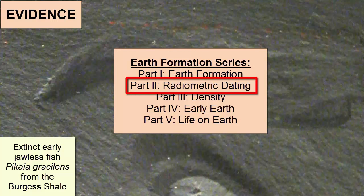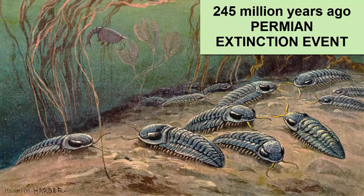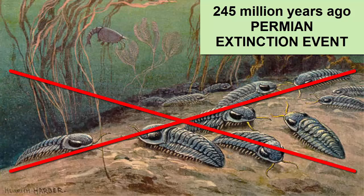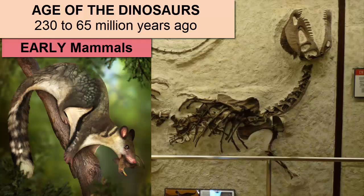Watch the video tutorial on radiometric dating for more information on that process. 438 million years ago is our first evidence of organisms moving onto land, including the first plants and insects. 245 million years ago was the largest mass extinction on the planet, during which the trilobites and many other early forms of life went extinct. Dinosaurs evolved soon after and dominated the planet during the age of the dinosaurs, which lasted from 230 to 65 million years ago.